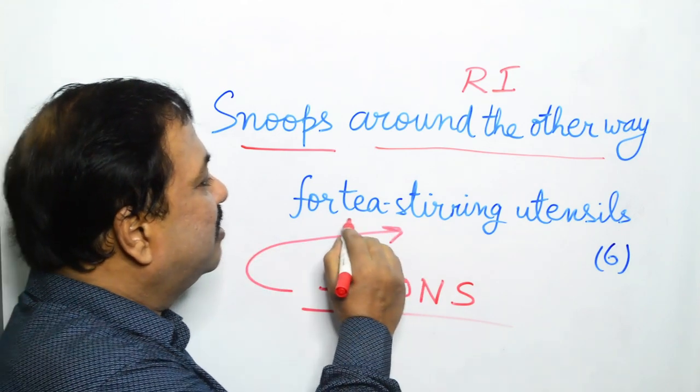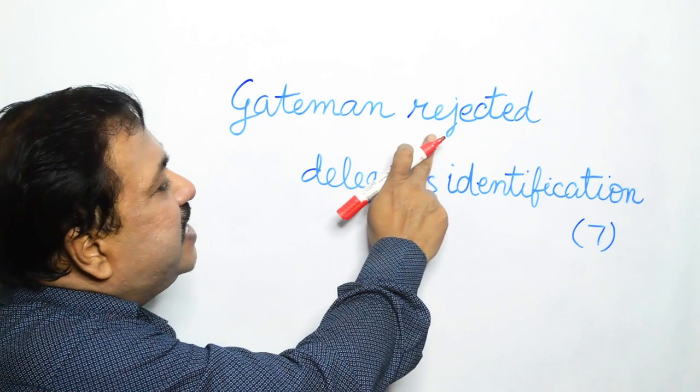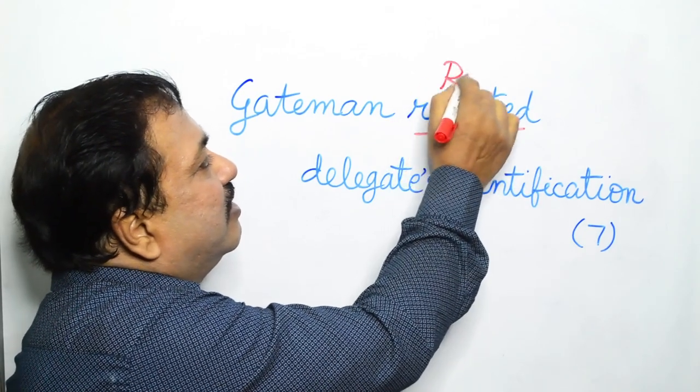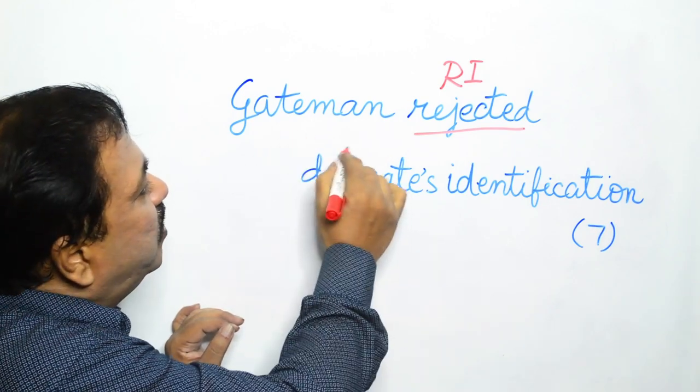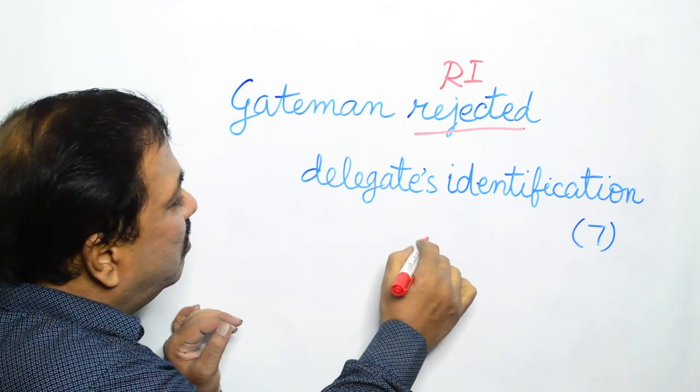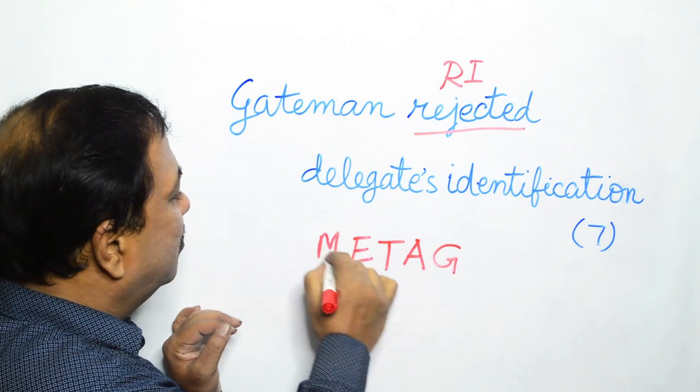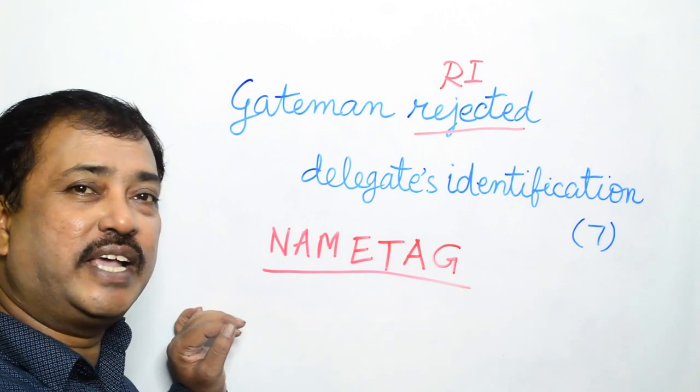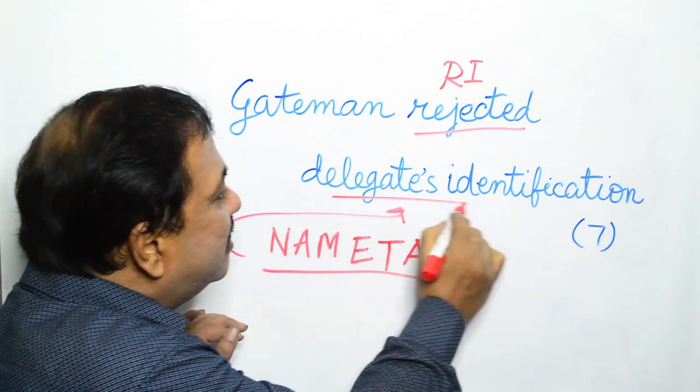Our penultimate clue: Get men rejected delegates identification. Now rejected is the reversal indicator. What we do? When get men is rejected, we do the reversal of get men, and in the process we get the word nametag, which is none other than delegates identification.